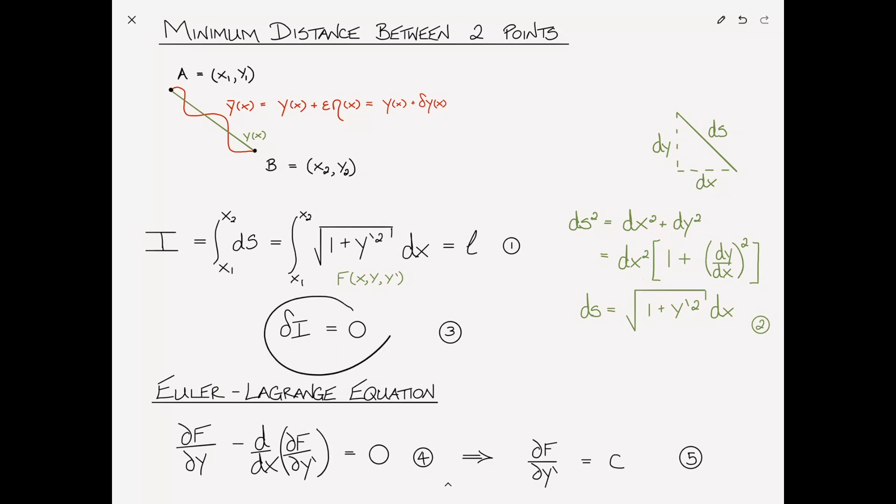its variation must be zero and that condition yields the Euler-Lagrange equation. So what we did is constructed the integral that we wanted to minimize, which in this case is just the length of the path. We've taken this functional and we've plugged it into the Euler-Lagrange equation.